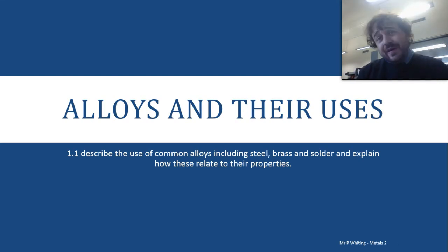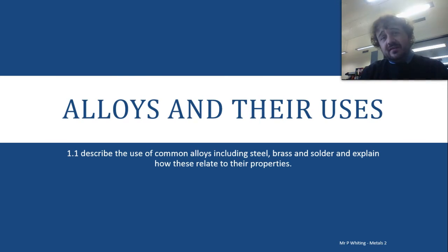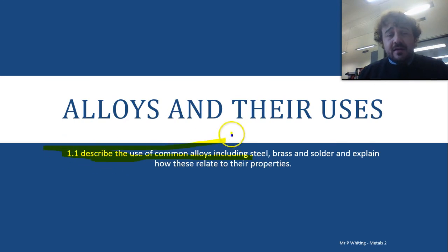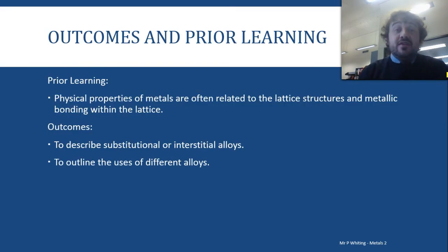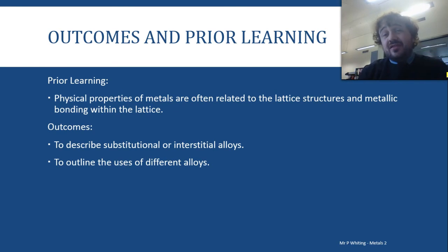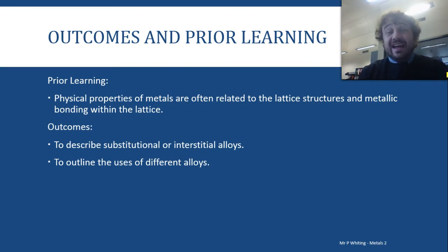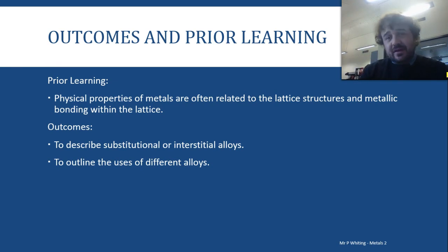Alright nerds, today we're going to talk about alloys — how we use them and why we use them, and why their properties allow them to do certain things. The dot point we're covering is describing the common uses of alloys. Before this, you already know that the physical properties of metals are often related to the lattice structures and the metallic bonding within that lattice. By the end, we want to be able to describe both substitutional and interstitial alloys and outline the uses of different alloys.